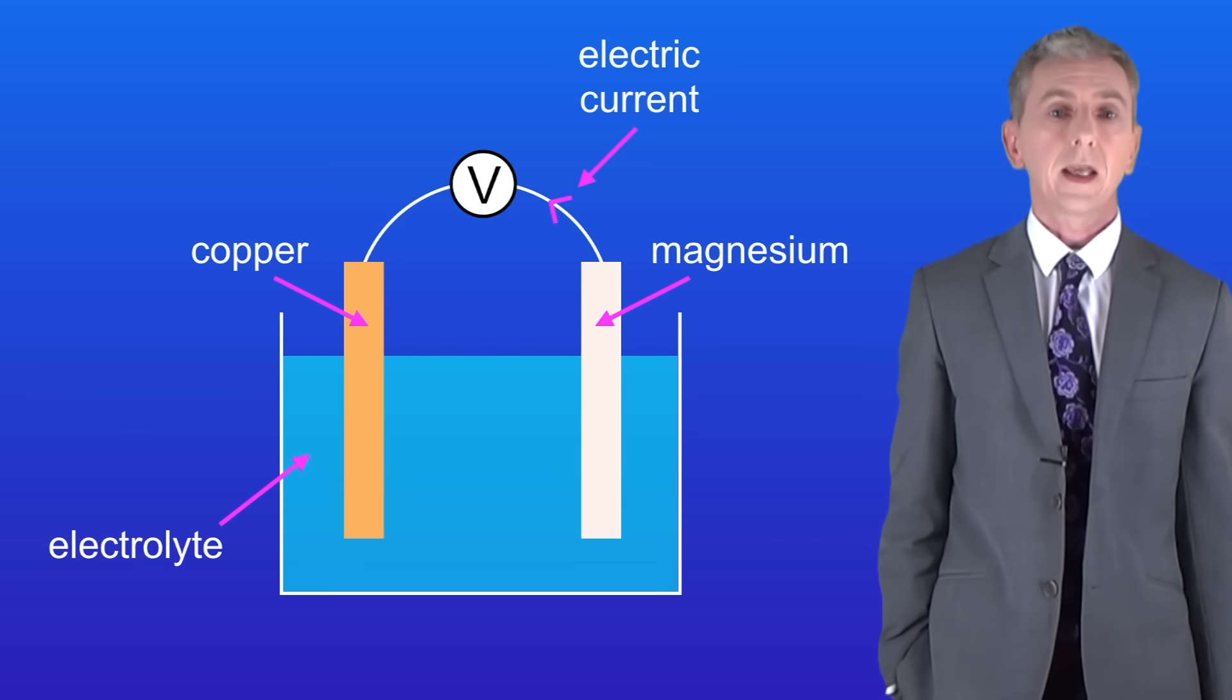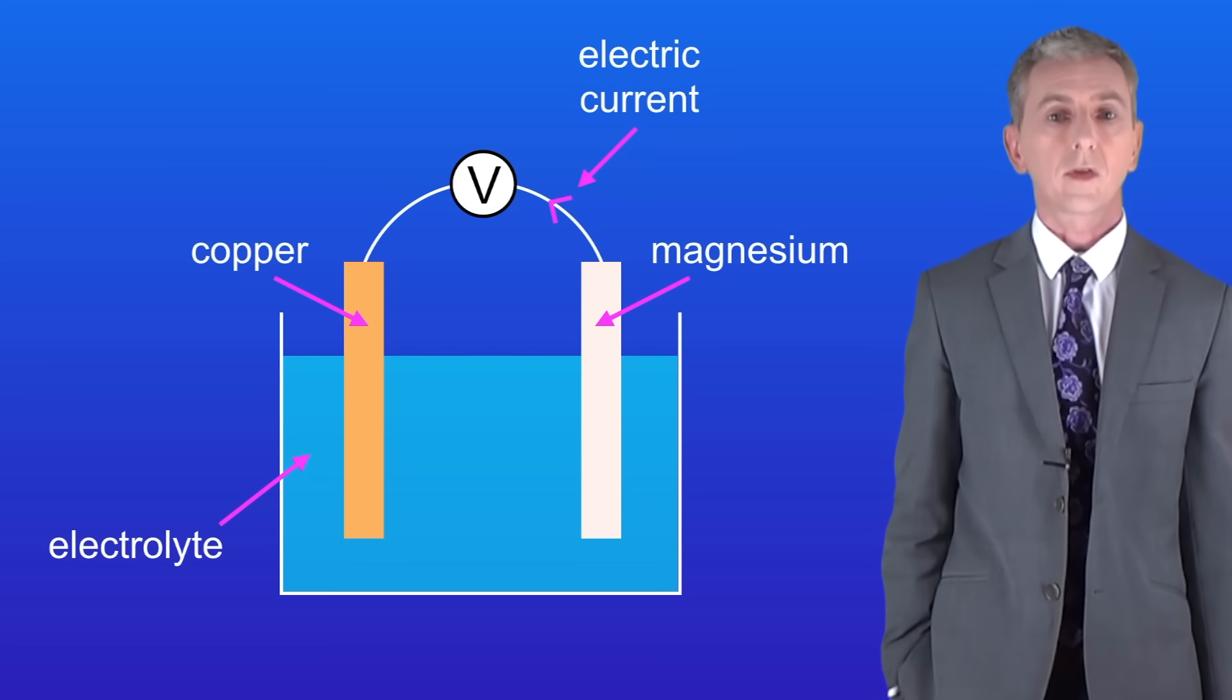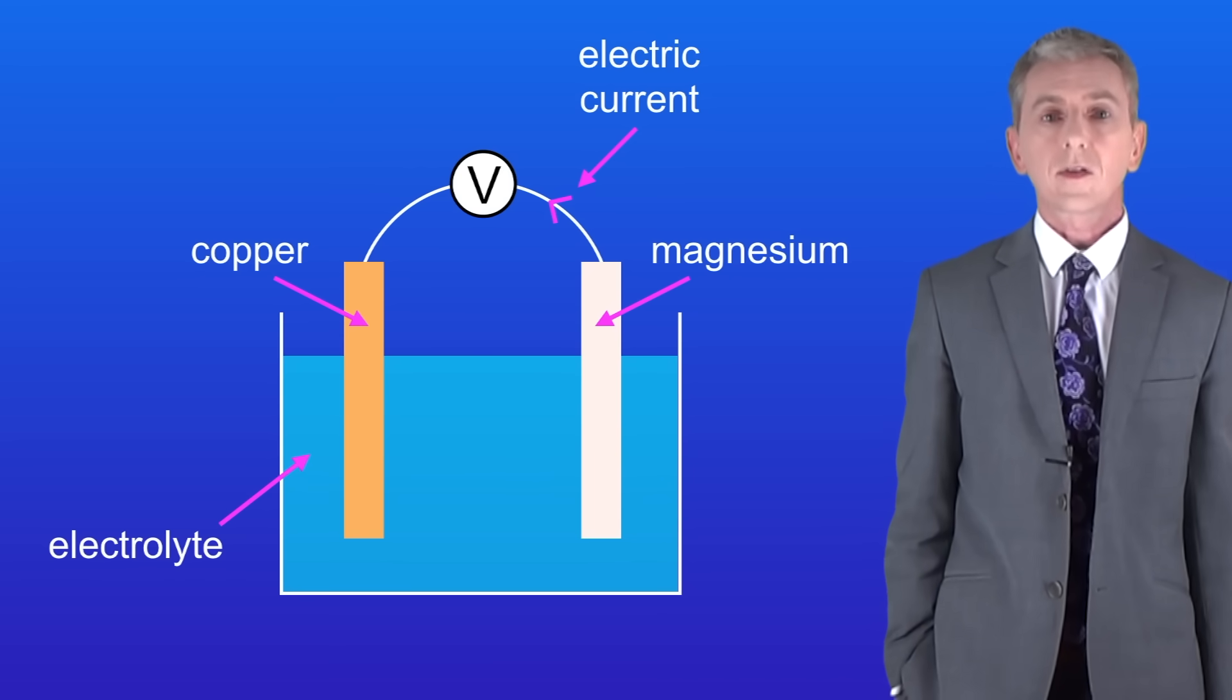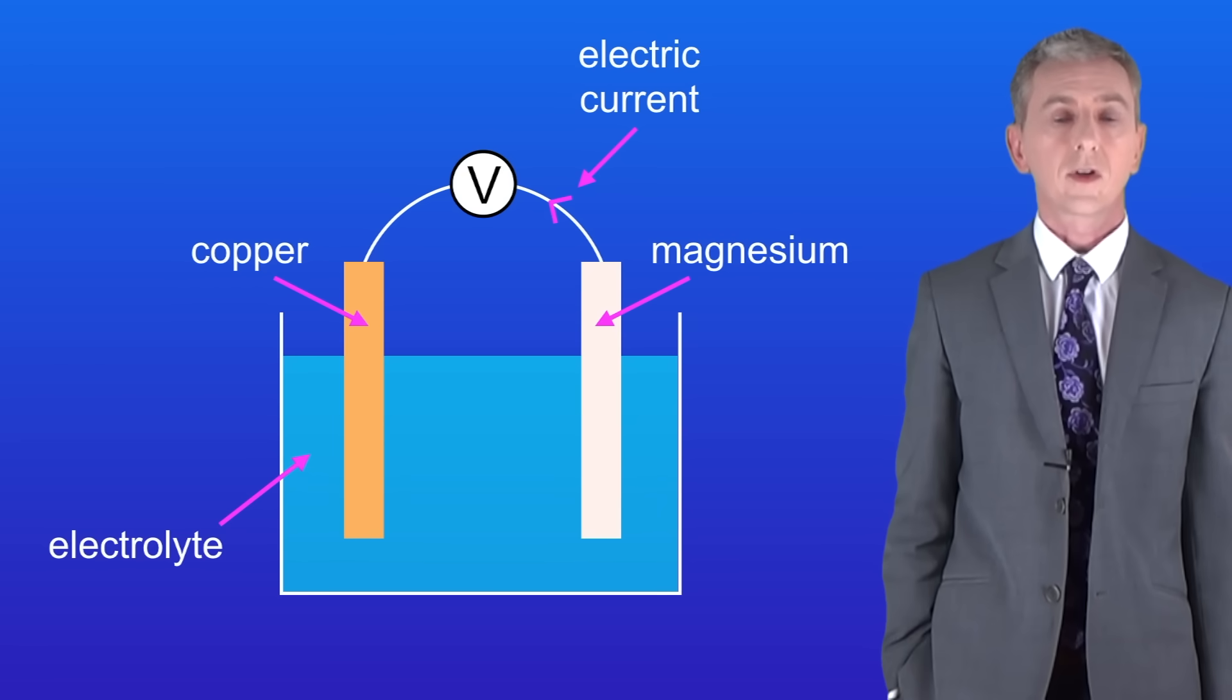What's happening here is that a chemical reaction is taking place on the surface of the two metals and these reactions are producing electricity. Scientists call this setup a cell and we can use cells to generate electricity.